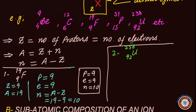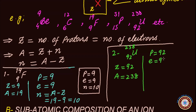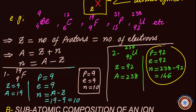Another example: 92U238, the atomic symbol of uranium. The proton number is 92 and the nucleon number, also called the mass number, is 238. There are 92 protons in its nucleus and 92 electrons revolving in shells. Neutrons equal mass number minus proton number: 238 minus 92 equals 146. This is the subatomic composition of uranium-238.